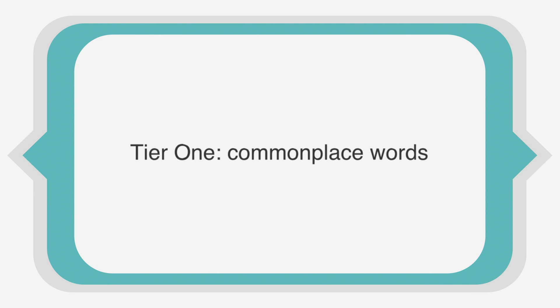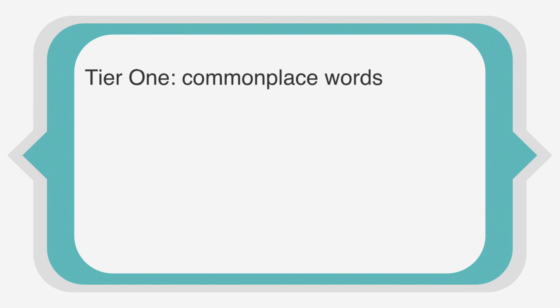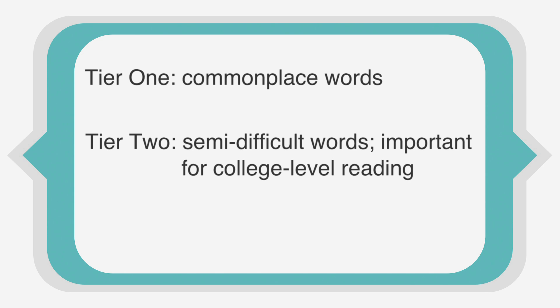Tier 1, commonplace words, words that most native English-speaking high school students know. Tier 2, semi-difficult words that are important to know. You'll encounter these words in lots of college-level reading. And Tier 3, difficult words that are either rarely encountered in college-level reading or are only found in a limited number of academic fields.